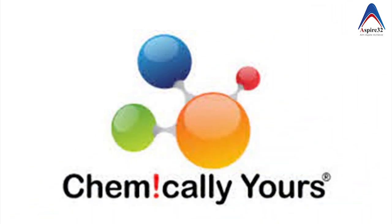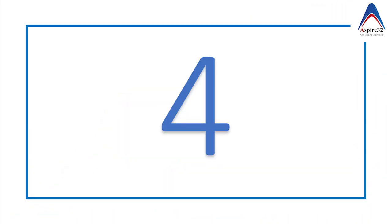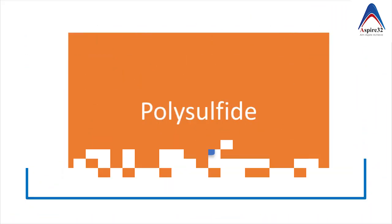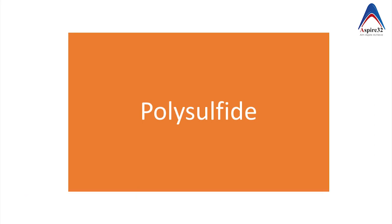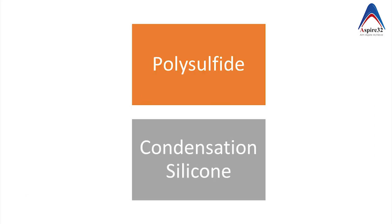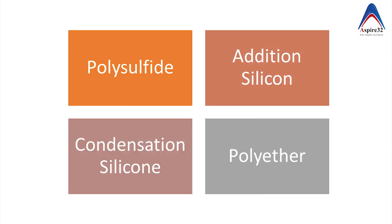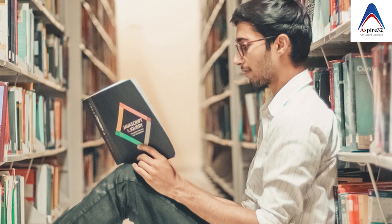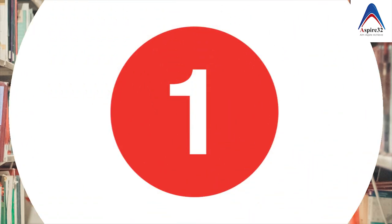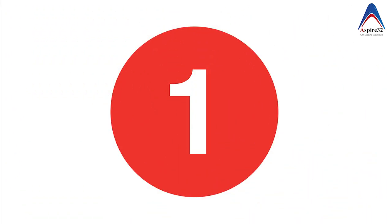Based on chemical composition, there are four types of elastomeric impression material: polysulfide, condensation silicone, addition silicone, and polyether. Let us first learn about the polysulfide elastomeric impression material.